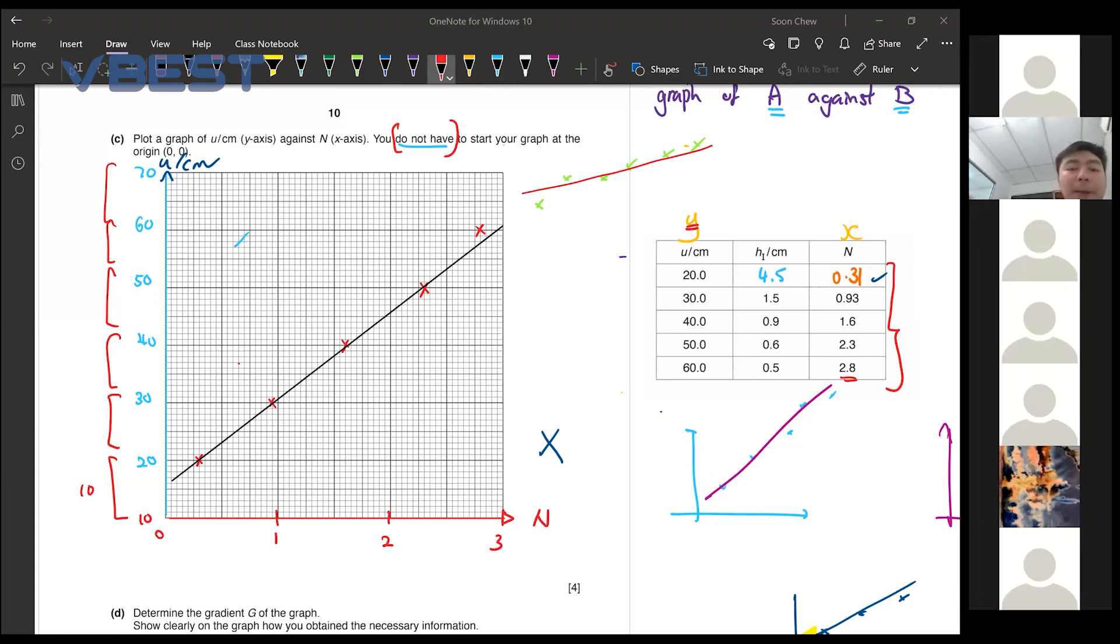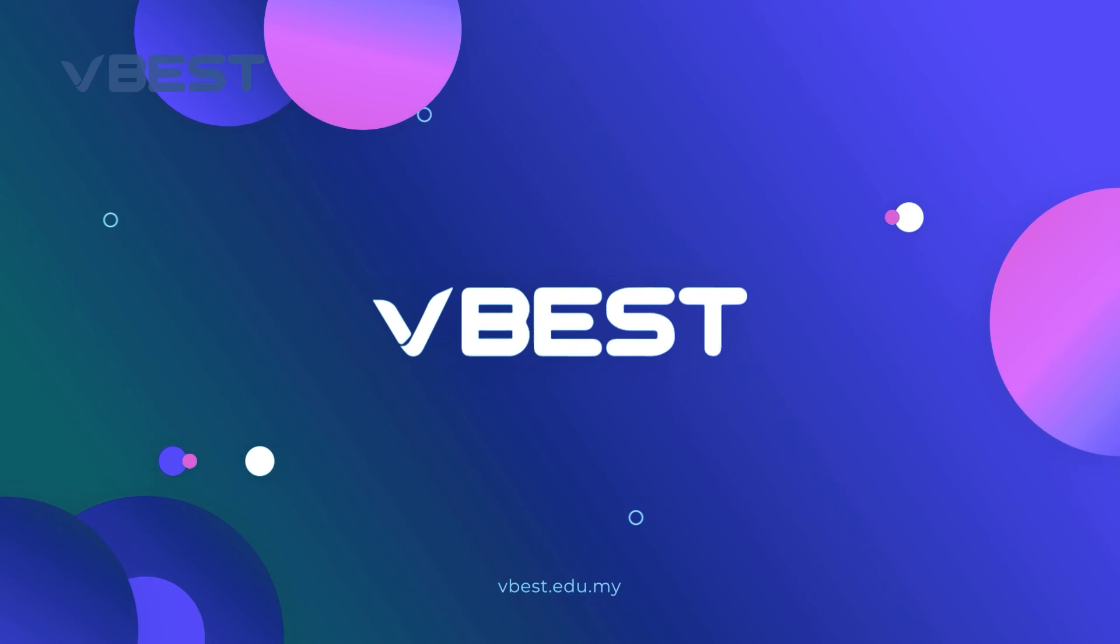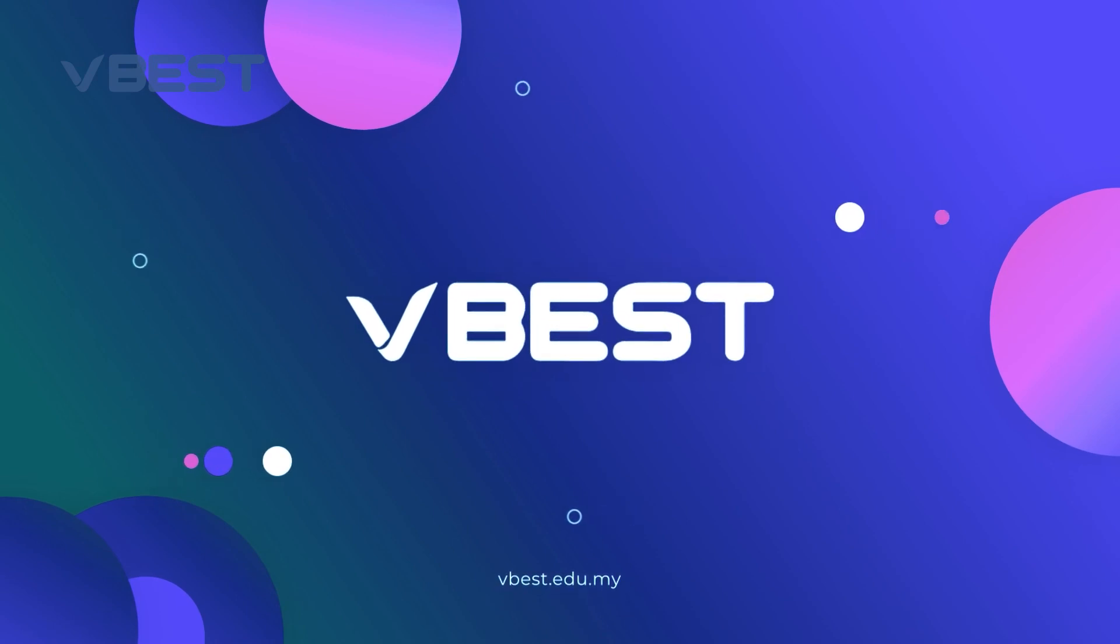When you ask how to find the gradient with the graph. When you guys are looking for the gradients of the graph, you need to choose two points that is on the line. And then the two points must be as far away as possible. Maybe choose this coordinate and this coordinate here. And you use your gradient formula. y2 minus y1 over x2 minus x1. So this would be the formula for the gradient.